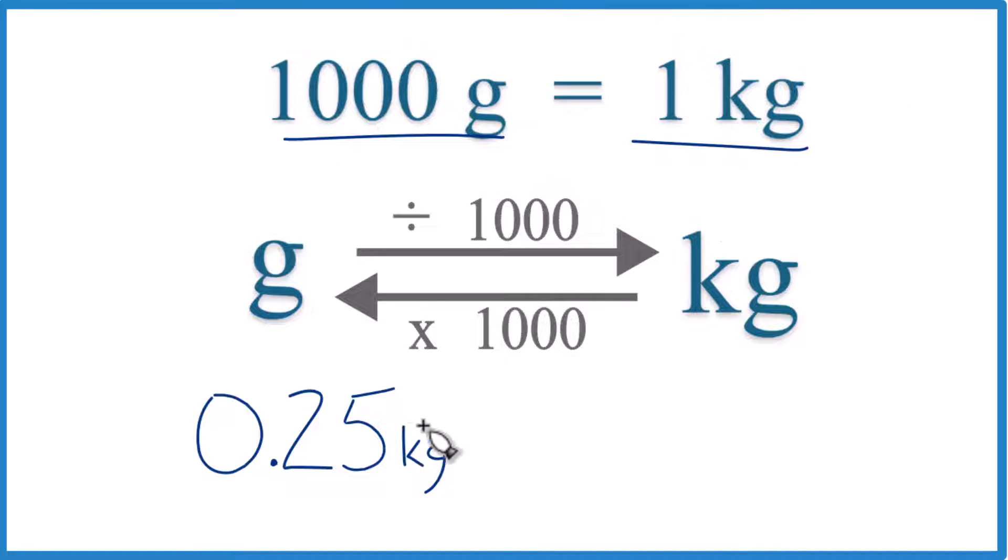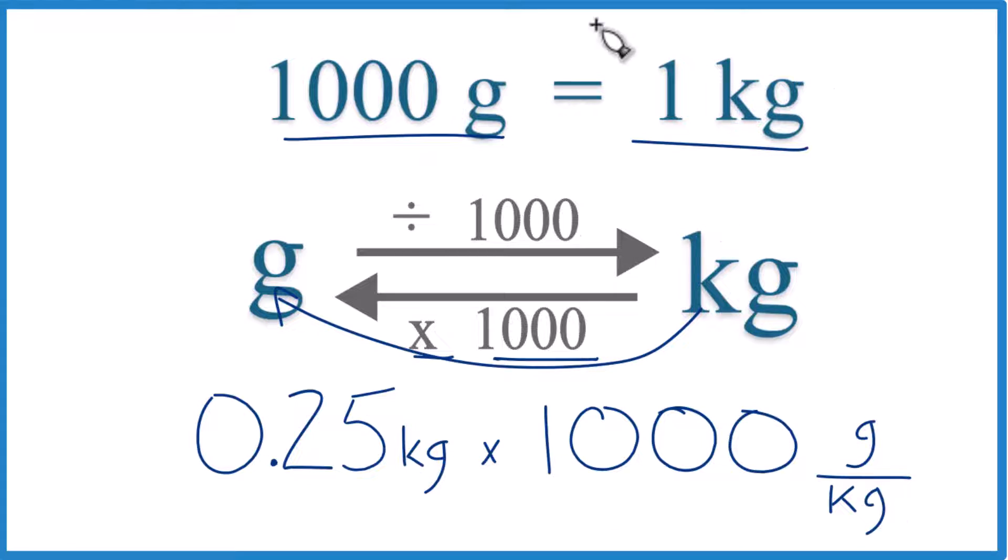In this case, we're starting with kilograms and going to grams, so we're going to multiply by a thousand. Notice this is a thousand grams per kilogram, just like our conversion factor. That's where this came from.